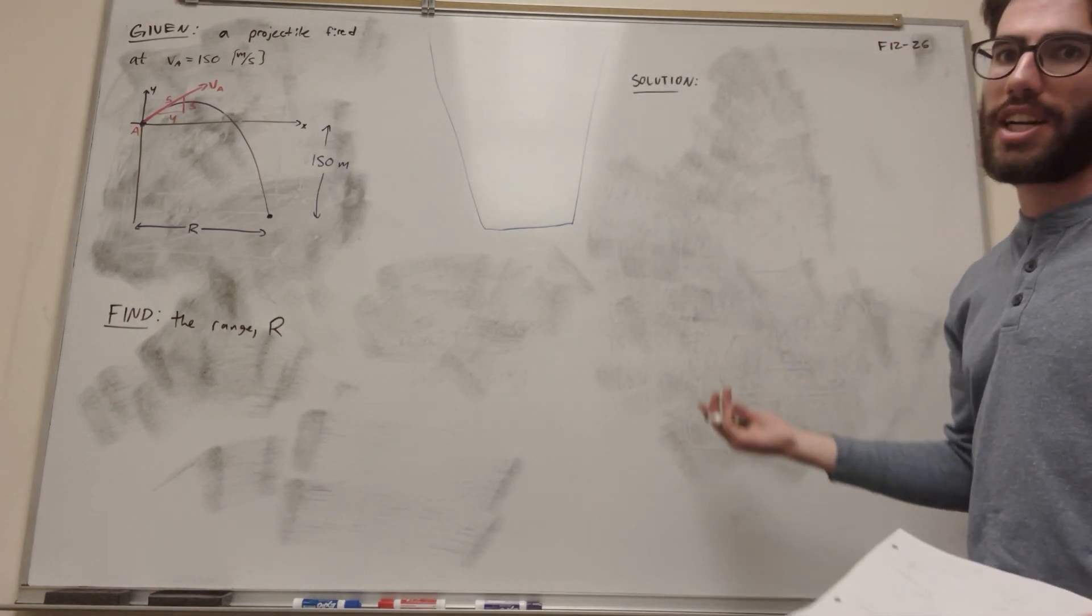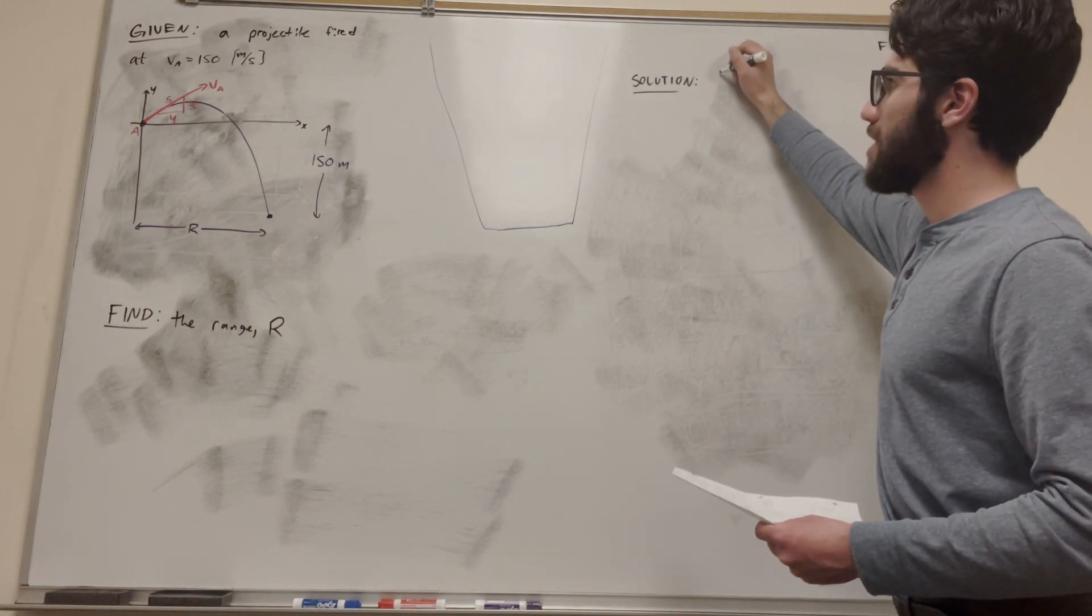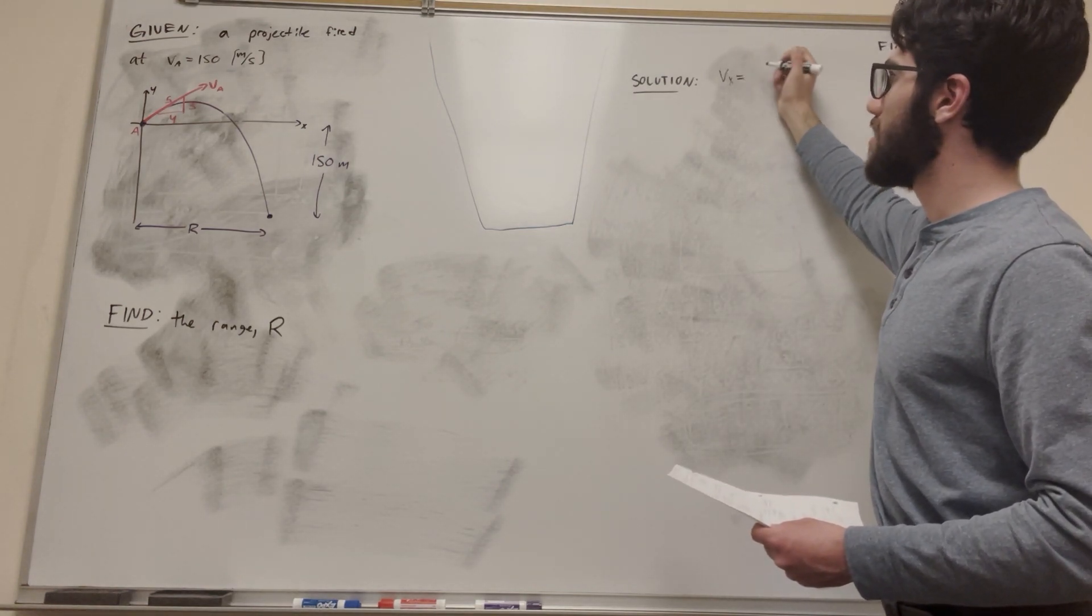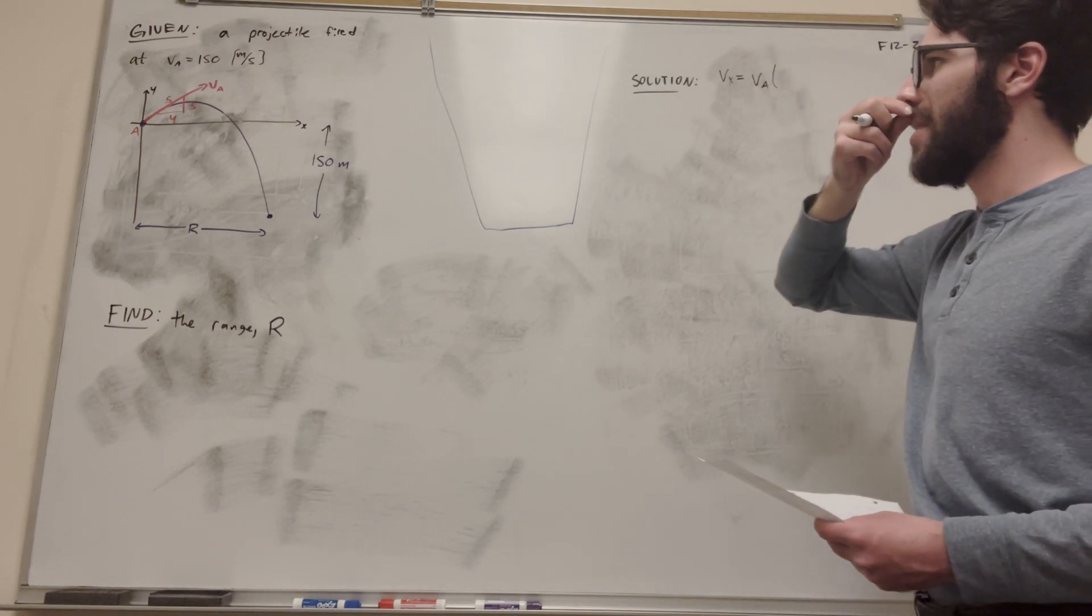When we have a velocity and it's shot at an angle, we usually want to split it up into x and y components. So let's find vx first. That's going to be vA times the angle of the x.